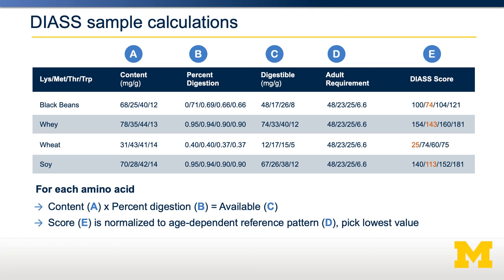If you look at black beans, the DIASS score for lysine is 100, meaning it has exactly the right amount of digestible lysine available. However, to find the total DIASS score for black beans, you find the lowest amino acid score — in this case, 74, for methionine. So the DIASS score for black beans is 74. For whey protein, the lowest DIASS score for any amino acid is 143, so the overall DIASS score for whey protein is 143. Wheat protein, on the other hand, is limiting in lysine — the lysine content is low and it's only digested at about a 40% rate — making wheat a very poor quality protein with a DIASS score of only 25.